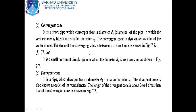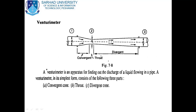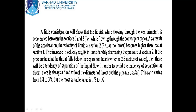The third part is the divergent cone. It is a pipe which diverges from a diameter d2 to a larger diameter d1. The divergent cone is also known as the outlet of the Venturimeter. The length of the divergent cone is about three to four times that of the convergent cone, as shown in figures 7.7 and 7.8.